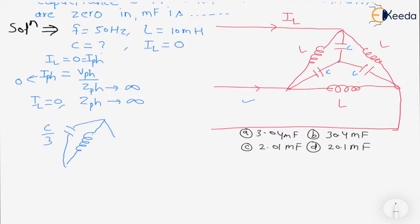C by 3... this L and this C by 3. Here this is L and this is C by 3. This is R phase, this is Y phase, this is Y phase, this is C phase, or you can say A, B, or C.